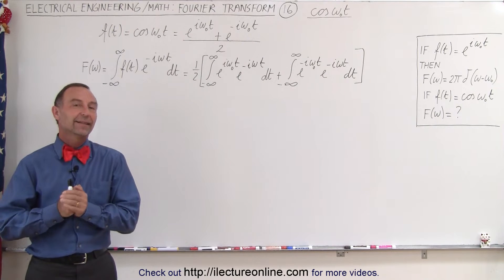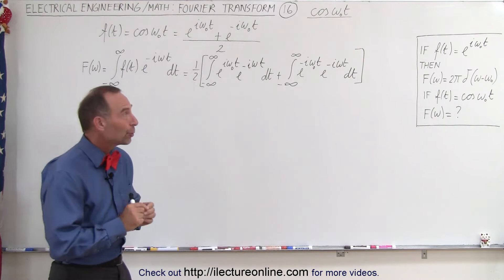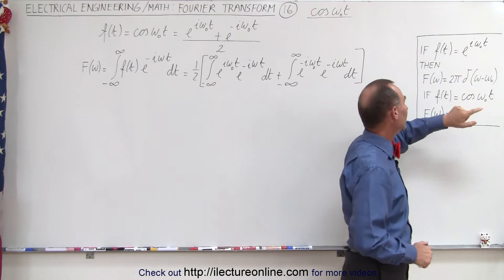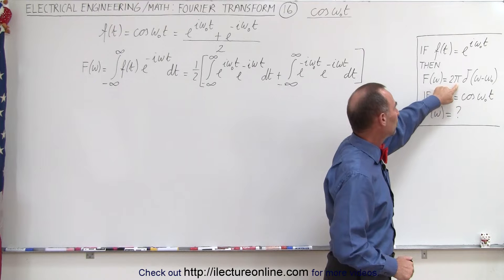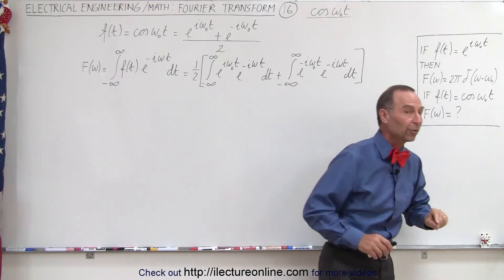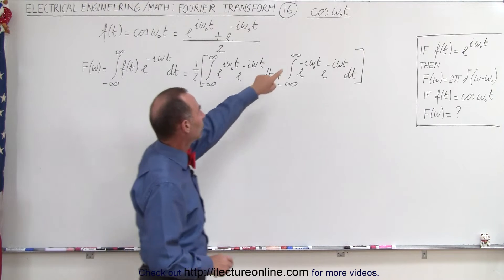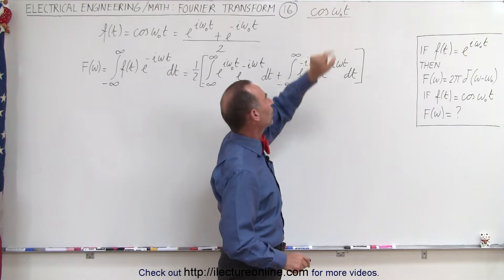Welcome to our lecture online. Now that we know how to find the Fourier transform of the function e^(iωt), which is 2π times the delta function δ(ω - ω₀), we're ready to find the Fourier transform when the input function is cos(ωt).